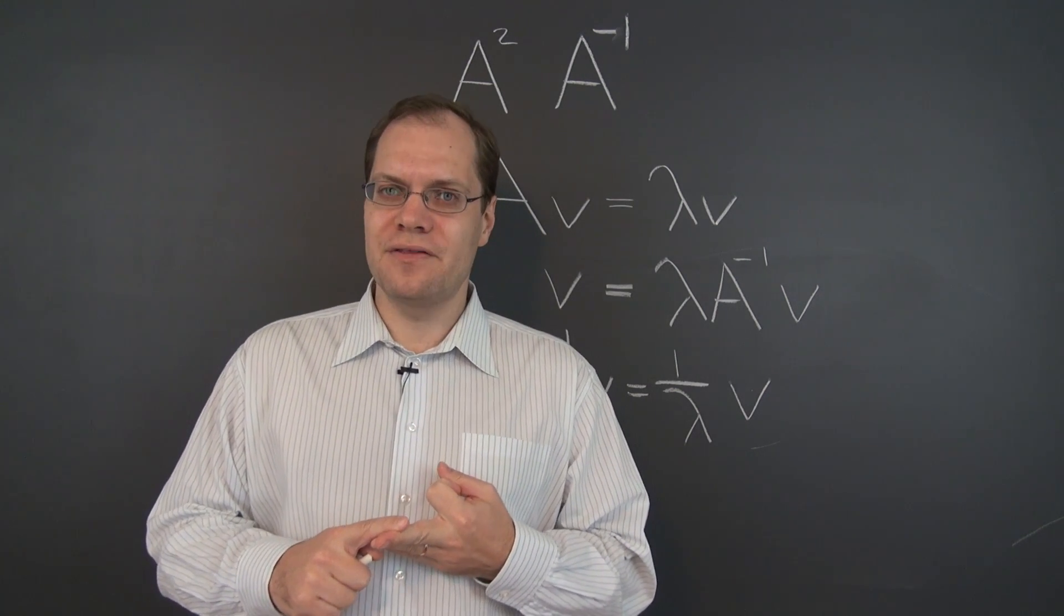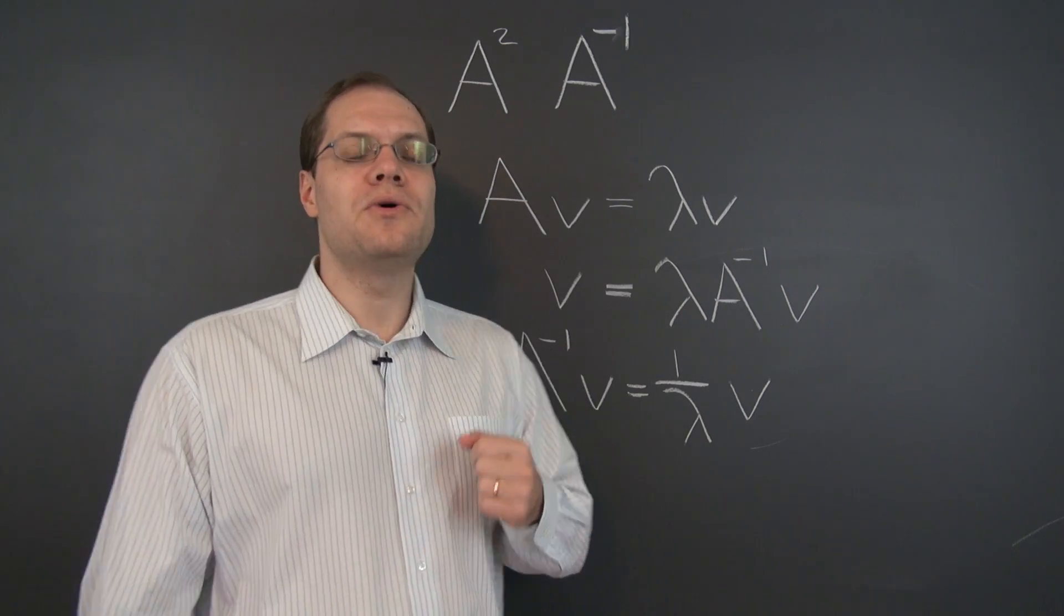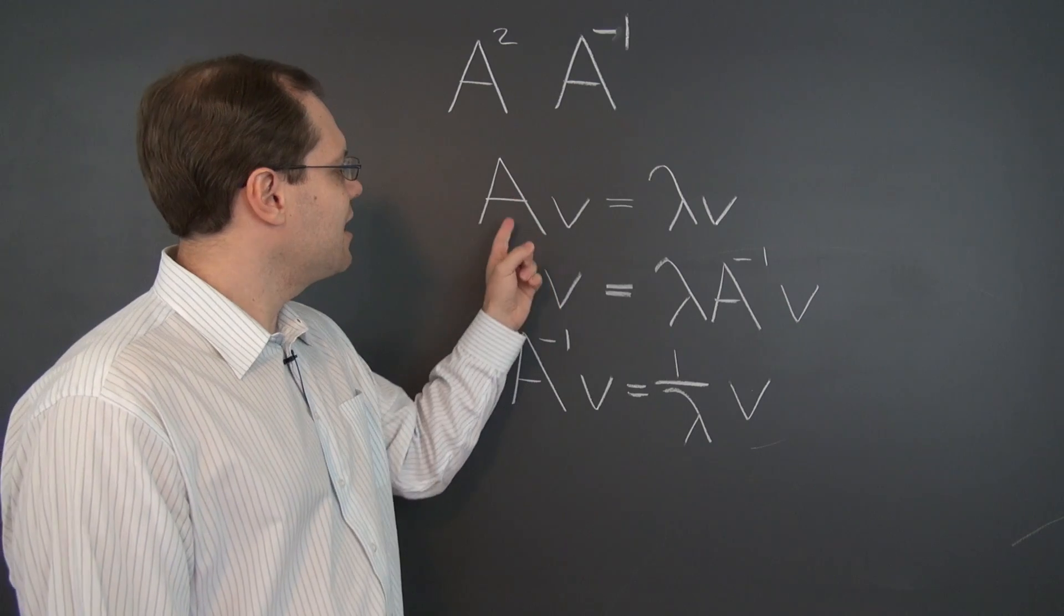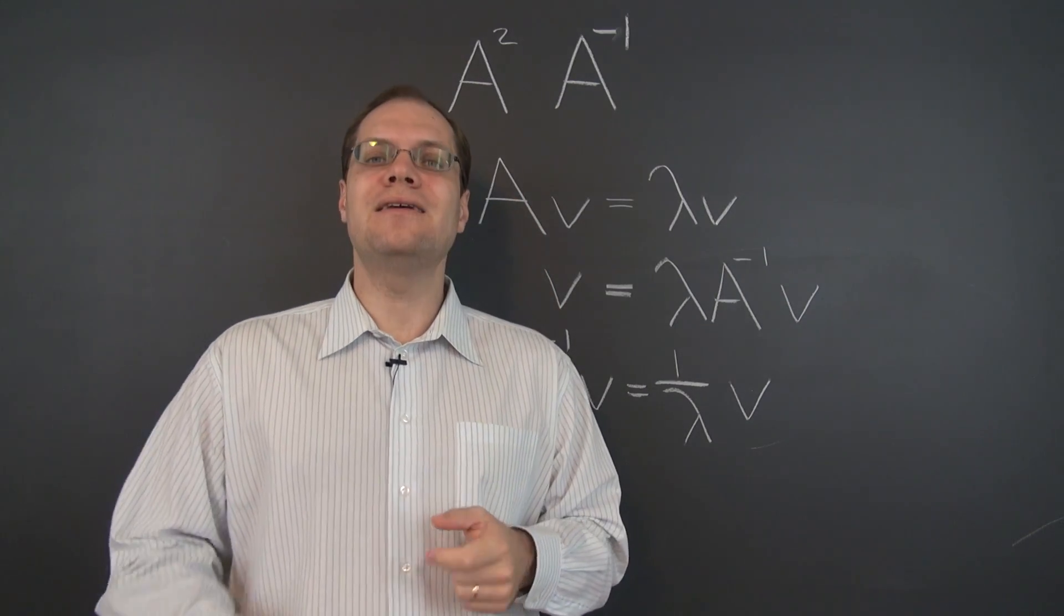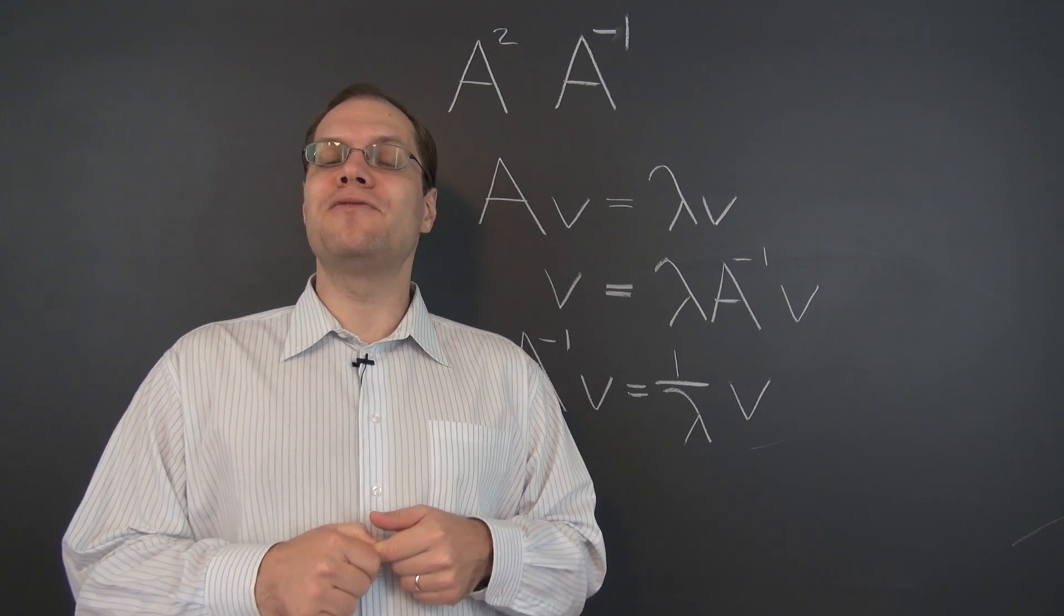For example, A to the negative fifth, which is the inverse of A raised to the fifth power, would have the exact same eigenvectors as the eigenvectors of A, and its eigenvalues will equal the eigenvalues of A raised to the power of negative 5.